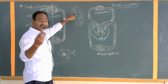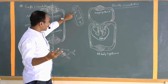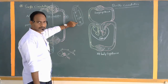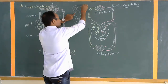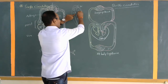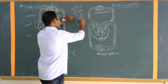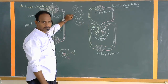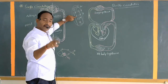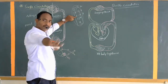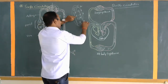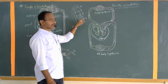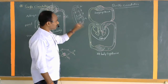Amphibians contain three chambers of the heart. Reptiles contain four chambers, but the fourth chamber is incompletely divided — they have an incompletely divided ventricle. Birds and mammals contain a well-organized four chambers of the heart.